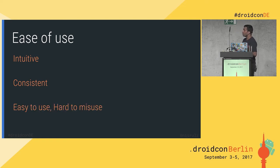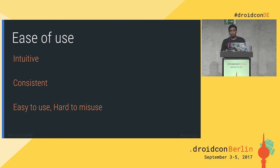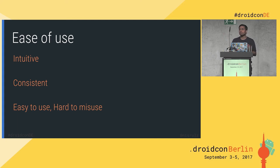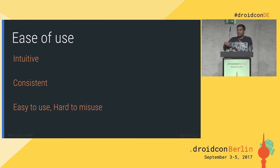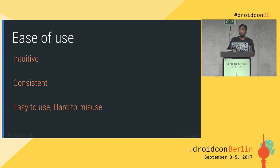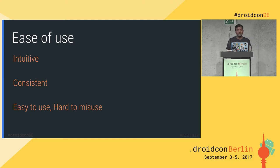The last rule I look for is: it should be easy to use and hard to misuse. A library developer needs to make sure it is very easy for the app developer to use the library code itself. But he also has the responsibility to make sure that even if the app developer tries to misuse it, he can't — because you put in validation checks for all the different types of scenarios that might exist.